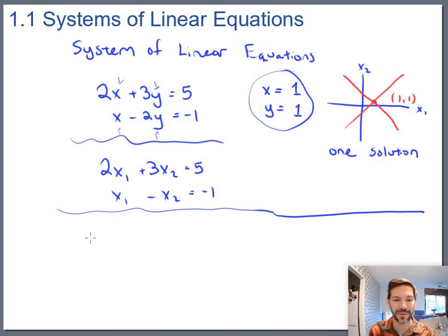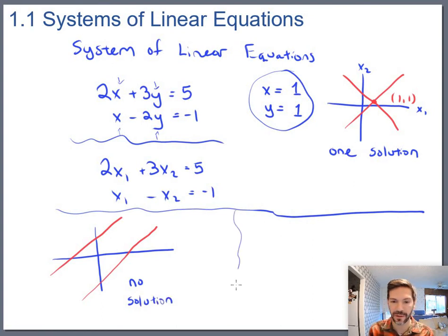There's also the possibility of having no solutions. I think you can probably imagine what that looks like graphically - that just means that the two lines don't intersect ever. So that means parallel lines.